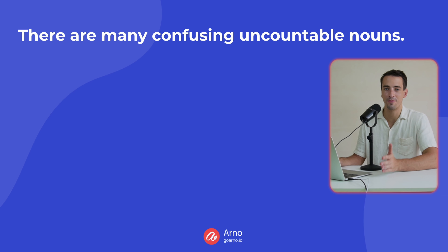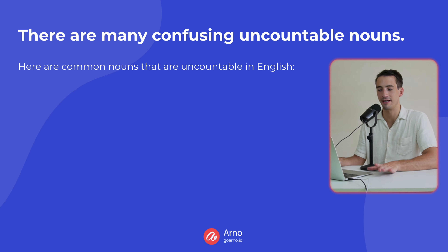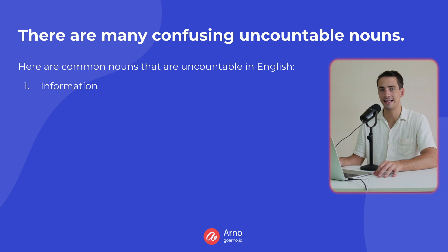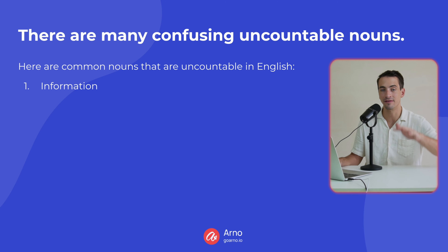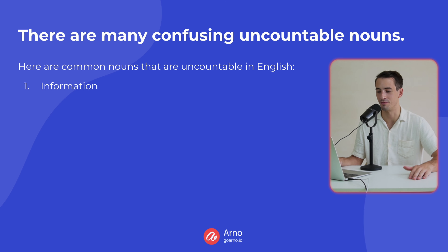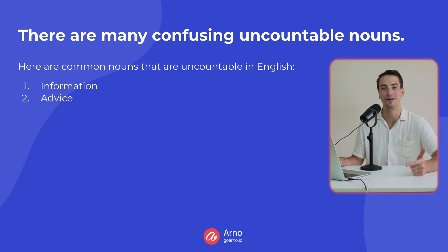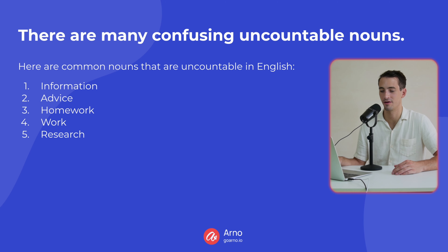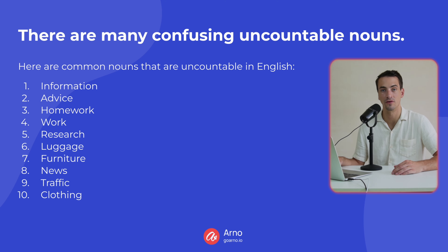There are many confusing uncountable nouns in English. Here are the most common ones that cause problems for non-native speakers. First: 'information' — you can't have one information or two informations. You can only have a lot of information or a little bit of information. In other languages, information is countable, but in English it is not. Other examples: advice, homework, work, research, luggage, furniture, news, traffic, clothing, and bread.